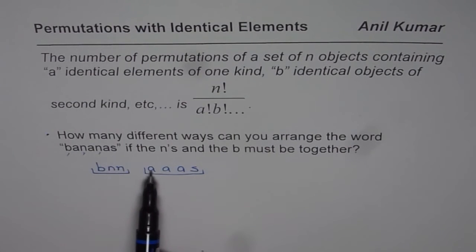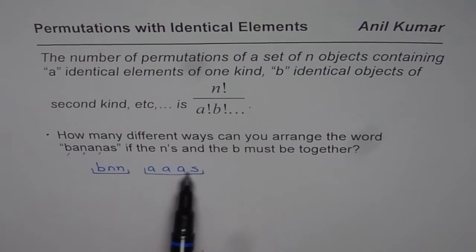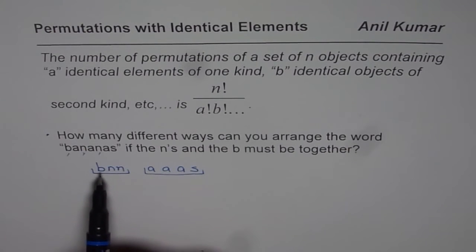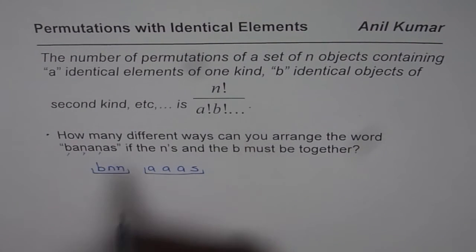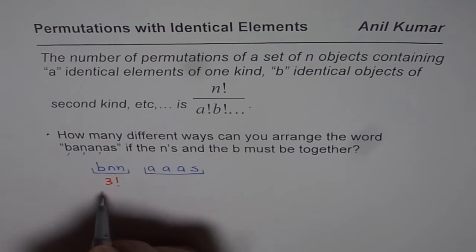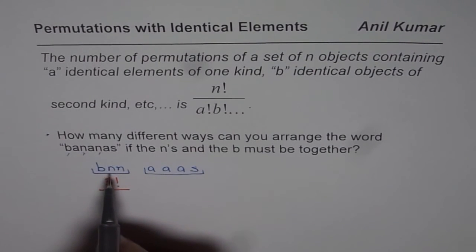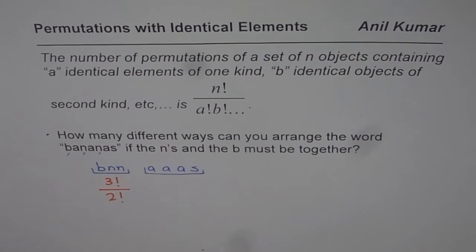So basically, we have these five positions to fill in. Now, let us try to understand in how many ways can we arrange the letters b and n. What we have is n factorial, is 3. So we write 3 factorial divided by a is 2, two n's. So that is 3 factorial by 2 factorial. In so many ways, we can arrange b and n.